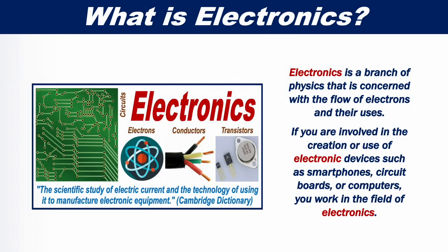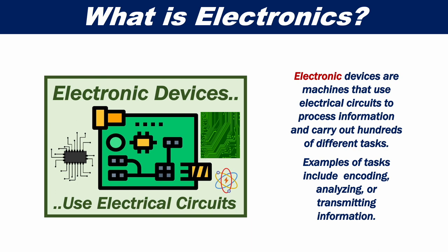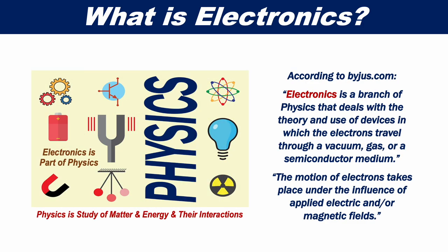What is Electronics? Electronics is a branch of physics that's concerned with the flow of electrons and their uses. If you're involved in the creation or use of electronic devices, such as smartphones, circuit boards or computers, you work in the fields of electronics. According to Bygis.com, Electronics is a branch of physics that deals with the theory and use of devices in which the electrons travel through a vacuum, gas or a semiconductor medium.